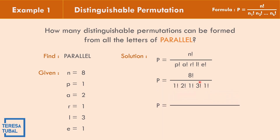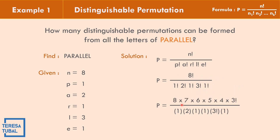We stop the expansion at 3 factorial in the numerator to cancel the 3 factorial in the denominator. The denominator becomes: 2 factorial equals 2 times 1; 1 factorial equals 1; 3 factorial cancels; 1 factorial equals 1. In the numerator, 8 factorial expands as 8 times 7 times 6 times 5 times 4 times 3 factorial. We cancel 3 factorial and simplify 4 divided by 2 to get 2, leaving the denominator as 1. So P equals 8 times 7 times 6 times 5 times 2, which equals 3,360. The final answer is 3,360.